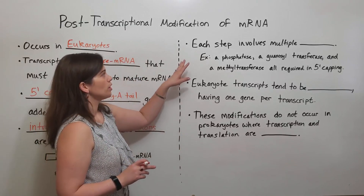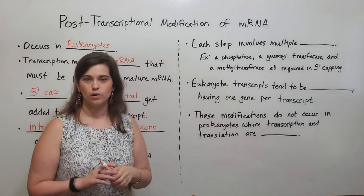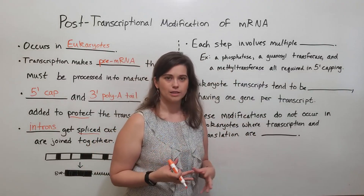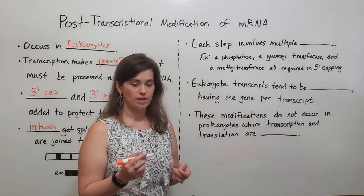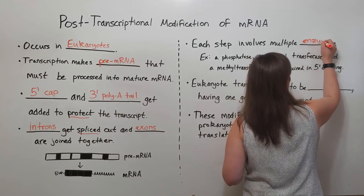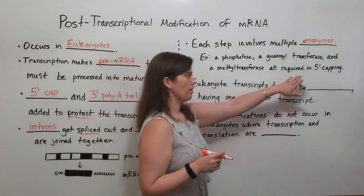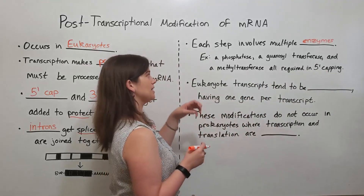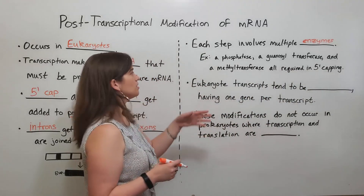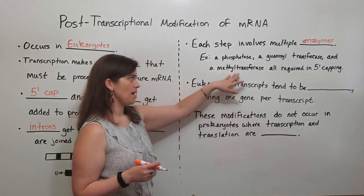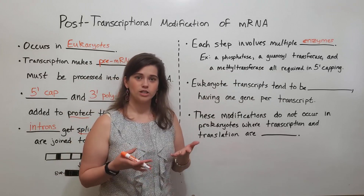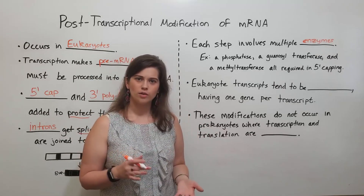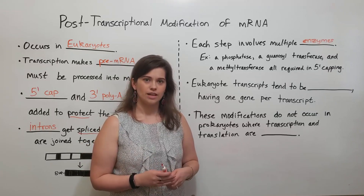Each step of post-transcriptional modification — whether it is the 5' cap, the 3' poly-A tail, or the splicing procedure — involves the activity of multiple enzymes. As an example, within the 5' capping procedure that adds a specialized nucleotide to the front end of the mRNA, there are at least three major enzymes involved: a phosphatase, a guanylyltransferase, and a methyltransferase. They each have different names because they have different functions as part of the 5' capping procedure. If you're interested in learning more about enzymes in general, please see my video on introduction to enzymes.